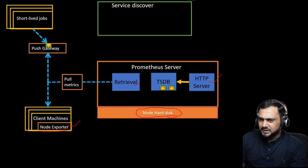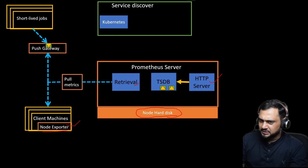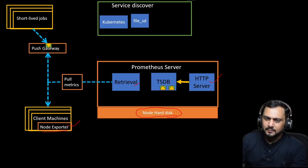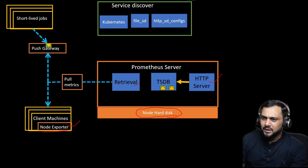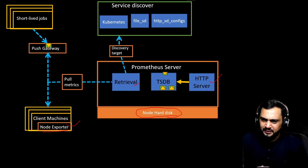Prometheus offers several service discovery mechanisms to automatically discover and monitor targets. In Kubernetes, Prometheus can discover services running in a cluster by querying the Kubernetes API. There is also file-based service discovery, where you list targets in a JSON or YAML file and Prometheus reads it to discover targets. Another option is HTTP service discovery, where Prometheus discovers targets over an HTTP endpoint — useful for dynamic environments where targets change frequently.